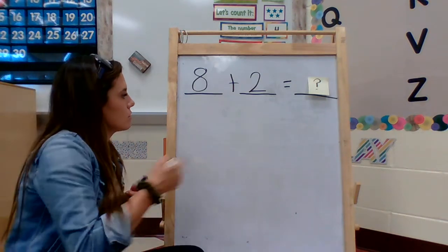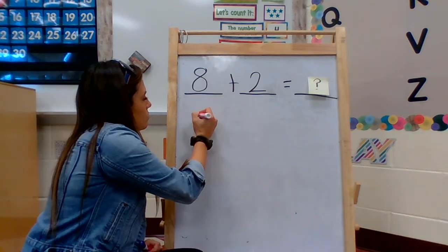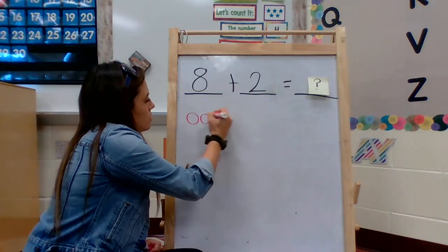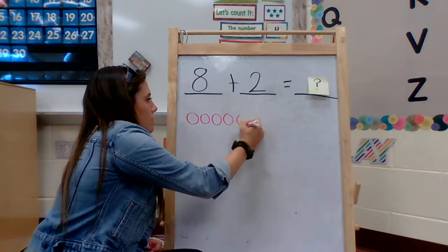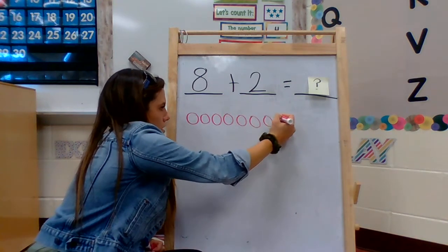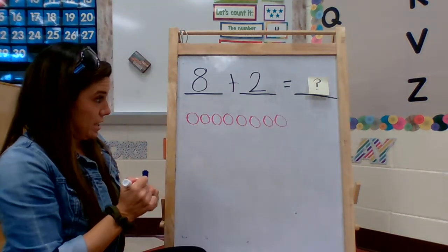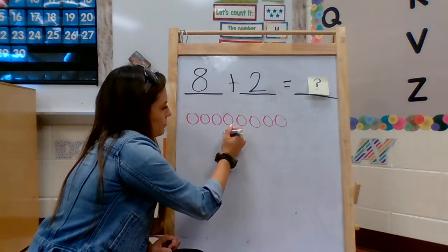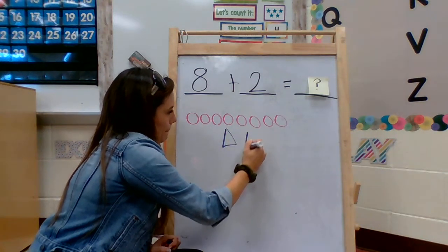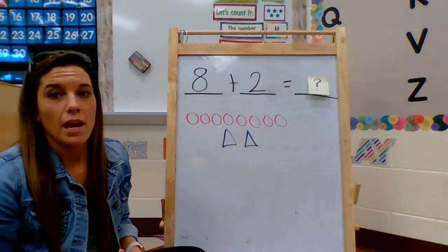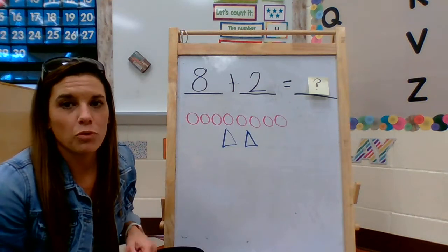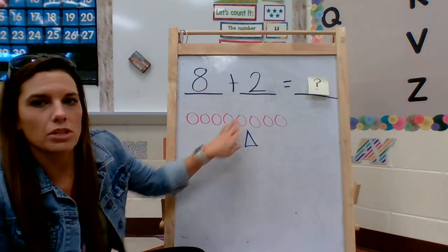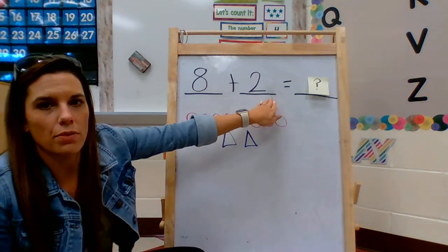So I have the number 8, so maybe I'm going to make 8 pink circles. 1, 2, 3, 4, 5, 6, 7, 8. And the number 2, so maybe I'm going to make 2 triangles. And we are going to see if we can figure out this way, by counting all of them together, if we can figure out the total.